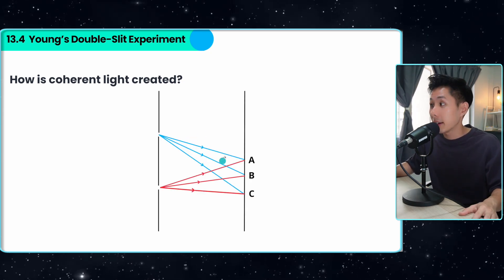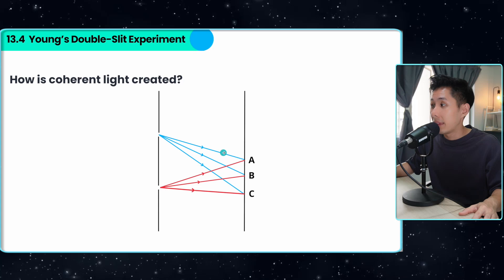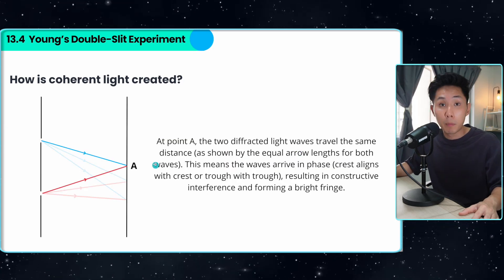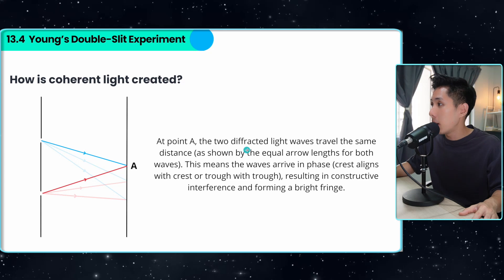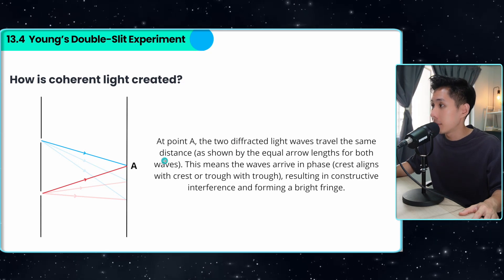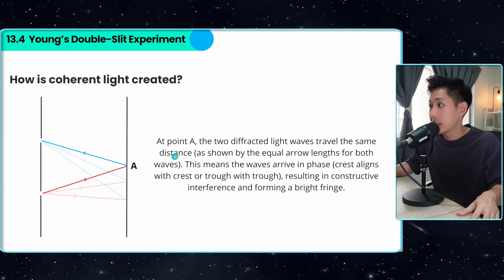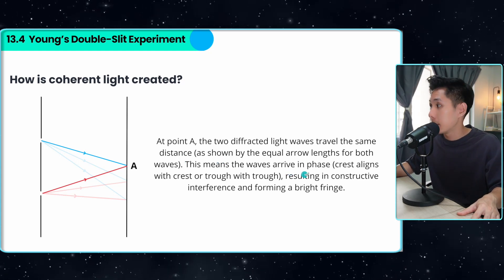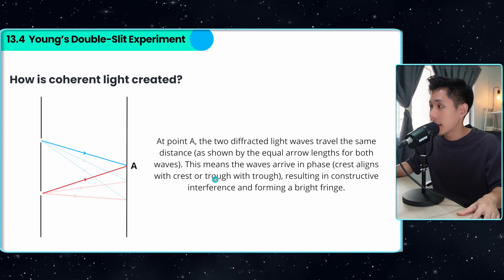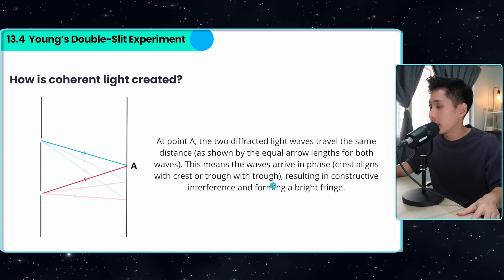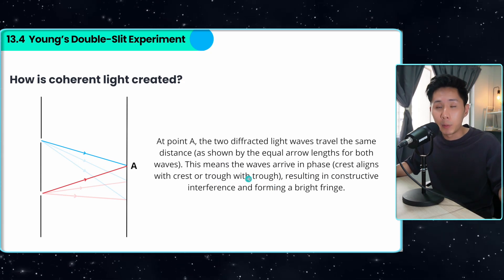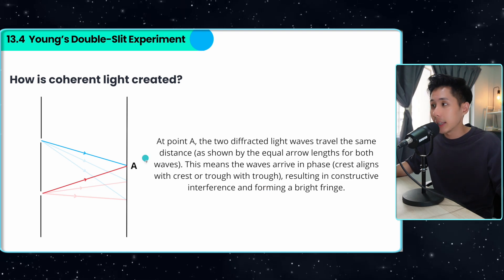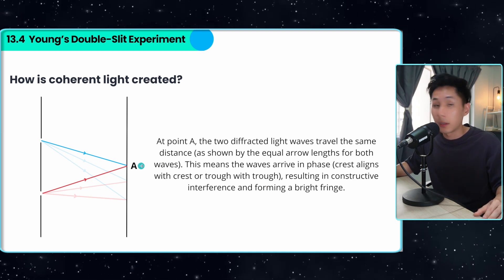I'm going to explain how diffracted light here can overlap and form bright and dark fringes. At point A, the two diffracted light waves travel the same distance, which means the waves arrive in phase — crest aligns with crest, trough with trough. When this condition is met, constructive interference occurs, which is why you see a bright fringe here.